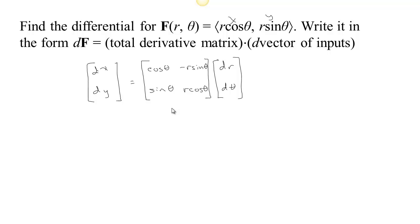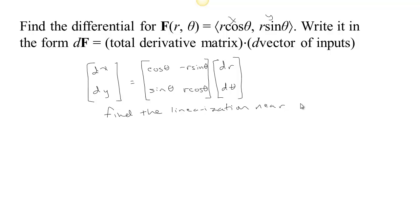Another thing we could do is calculate the best linear approximation of this function, which we call the tangent space or linearization. This is a transformation from polar coordinates to Cartesian coordinates x, y — you put in an angle and a radius and get an x and y location. We can also find the tangent approximation. Let's find the linearization near r equals 2 and theta equals pi over 4.